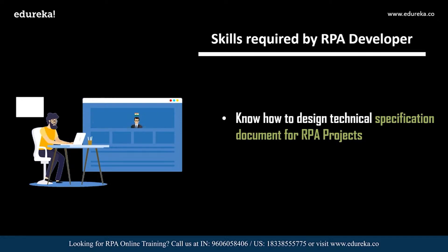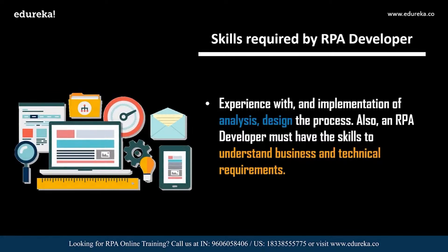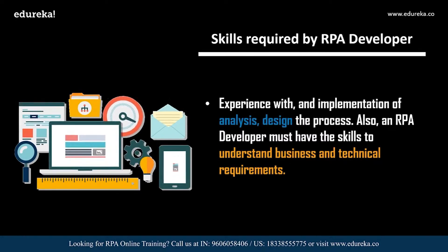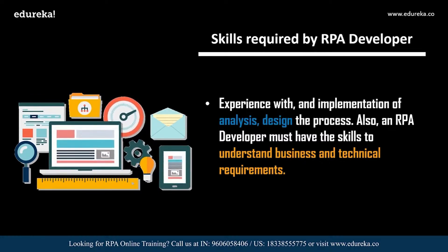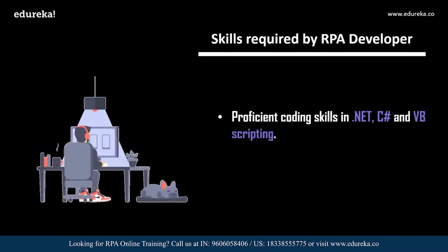For any project you work on, you need a proper technical specification document covering client requirements, project needs, time frame, features, tool used, number of bots deployed in production, where and how it will be deployed, and so on. You also need experience with analysis, design, and implementation of processes, and the skill to understand both business technical and non-technical requirements to deliver automation solutions.